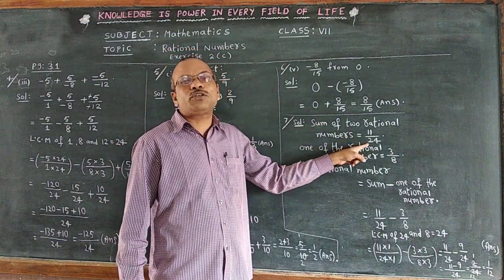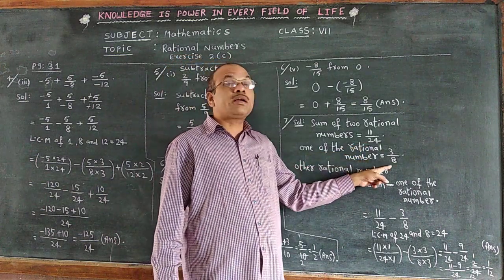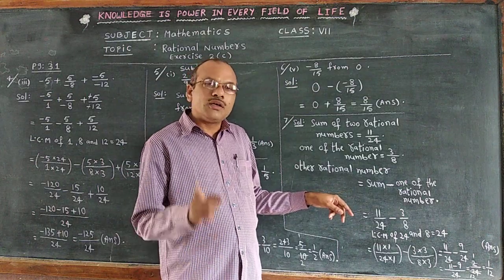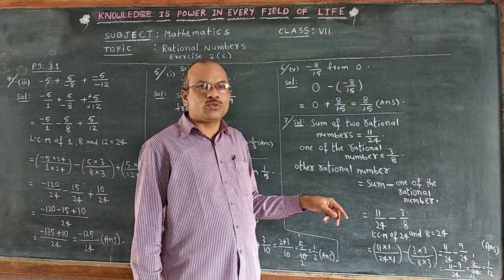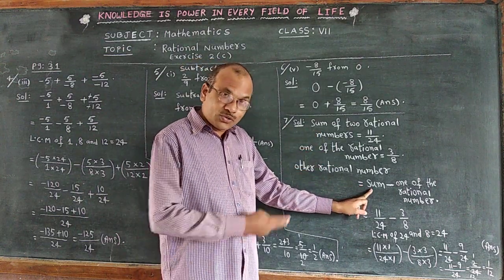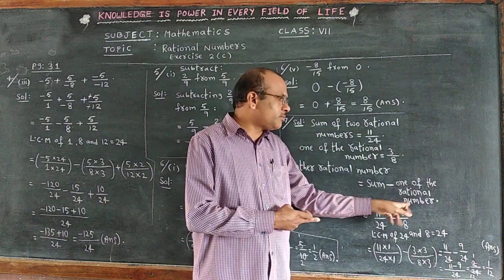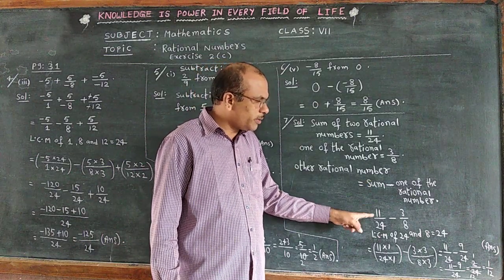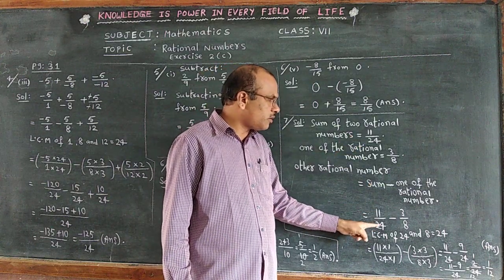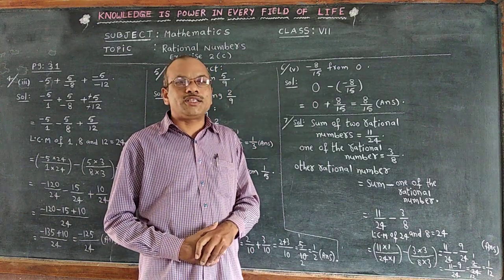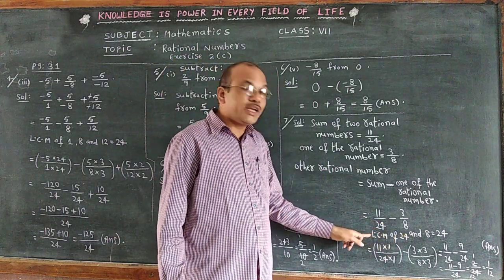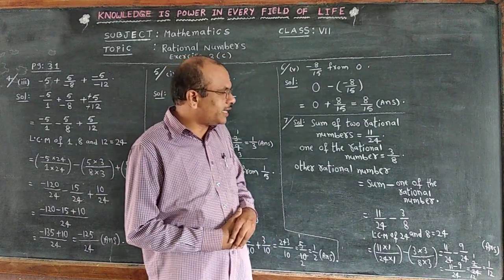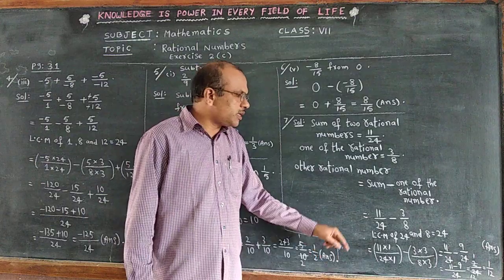The sum of the two rational numbers is 11 by 24, and one of the rational numbers is 3 by 8. To find the other rational number, the formula is: other rational number = sum minus one of the rational numbers, that is 11 by 24 minus 3 by 8. The denominators 24 and 8 are different, so we need the LCM procedure.